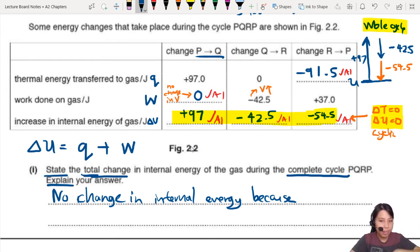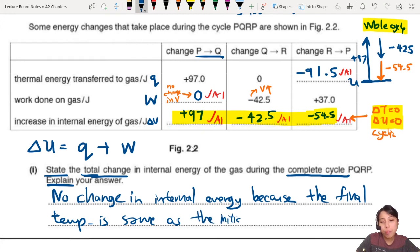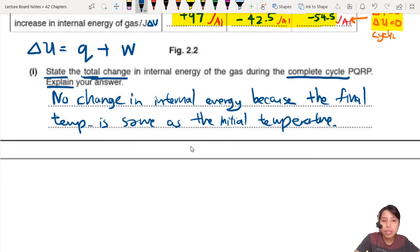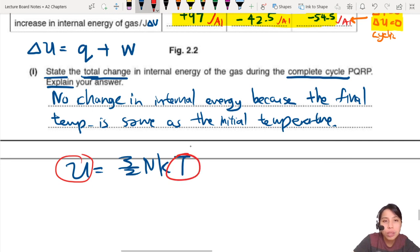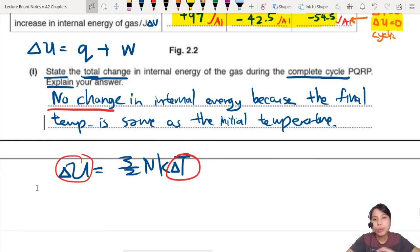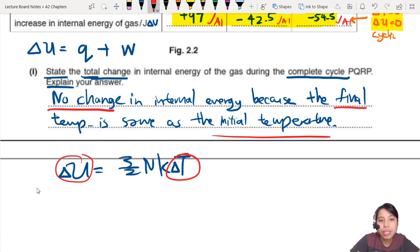Because this is where you can talk about temperature. So you say the final temperature is the same as the initial temperature. Okay, so your gas is back to the original state it started off with. That is this kinetic theory NKT where you can look at how U and T are related. Or I should say more specifically delta U and delta T. So here one mark comes to no change. One mark goes to the other one where you give a reason when you talk about final and initial temperature.